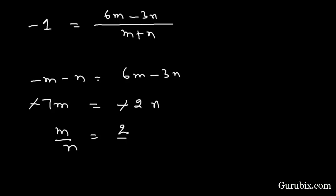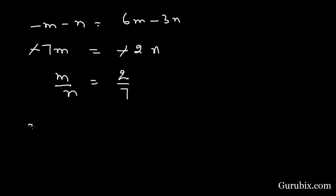Then m over n is equals to 2 is to 7. This means the required ratio m ratio n is equal to 2 ratio 7. This is the solution of the question. Thank you.